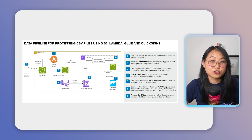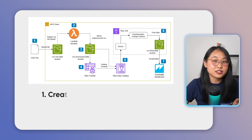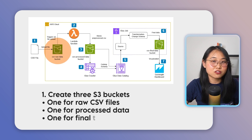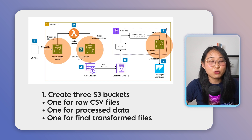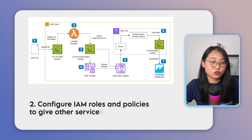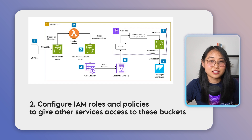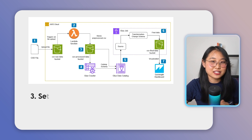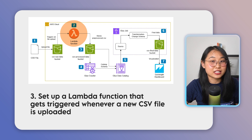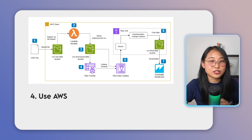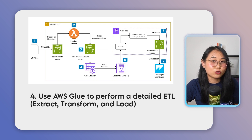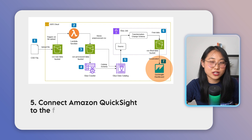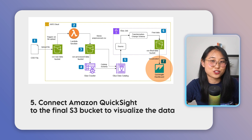Here's the architectural diagram and the steps you need to take. First, create three S3 buckets: one for raw CSV files, one for processed data, and one for the transformed files. Next, configure IAM roles and policies to give the other services access to these buckets. After that, set up a Lambda function that gets triggered whenever a new CSV file is uploaded — this function will clean the file and move it to the processed data bucket. Then, use AWS Glue to perform a detailed ETL, which stands for extract, transform and load. And finally, connect Amazon QuickSight to the final S3 bucket to visualize the data.